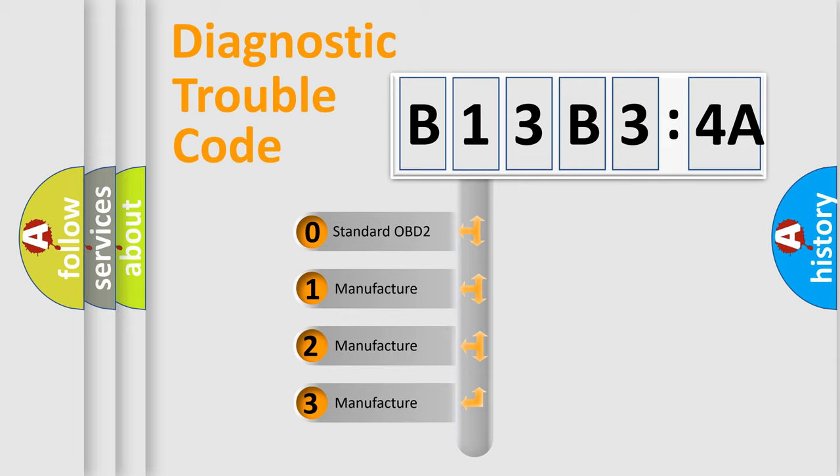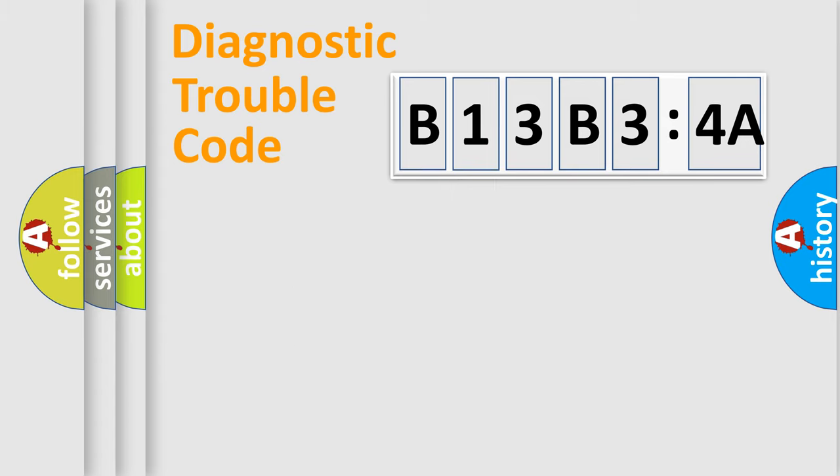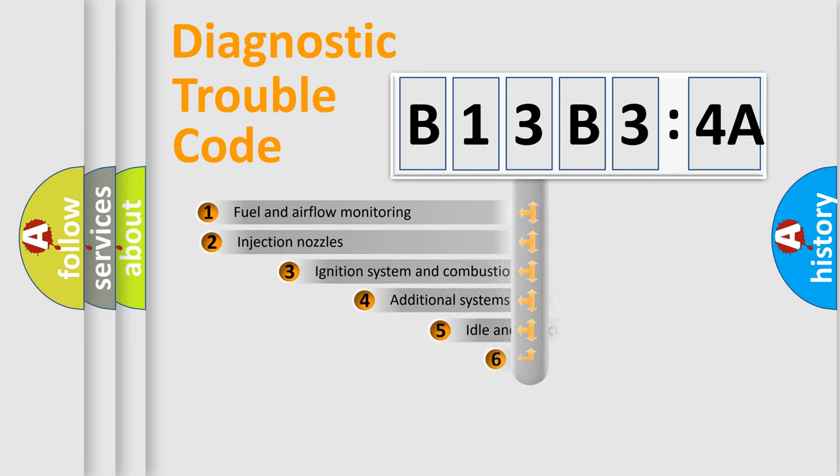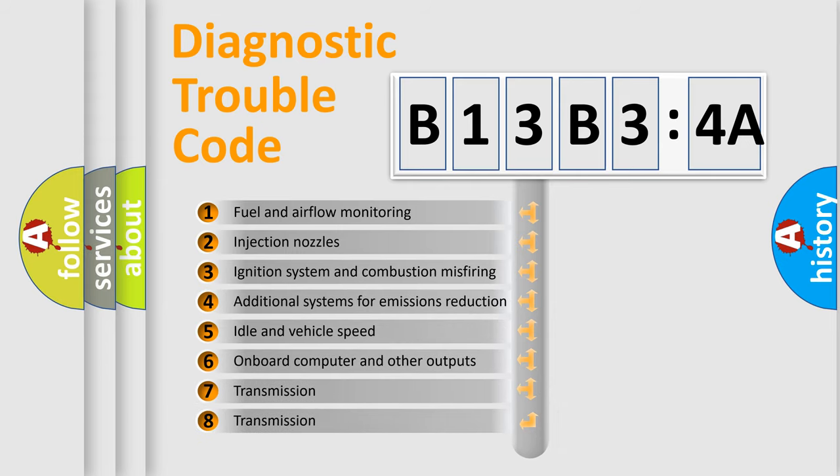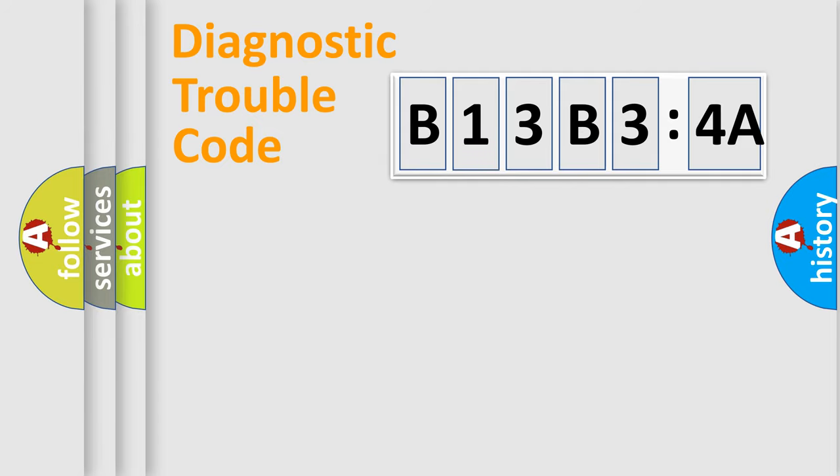If the second character is expressed as zero, it is a standardized error. In the case of numbers 1, 2, or 3, it is a more prestigious expression of the car-specific error. The third character specifies a subset of errors. The distribution shown is valid only for the standardized DTC code.